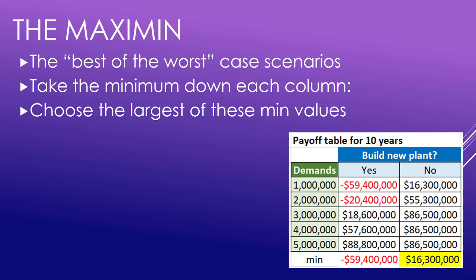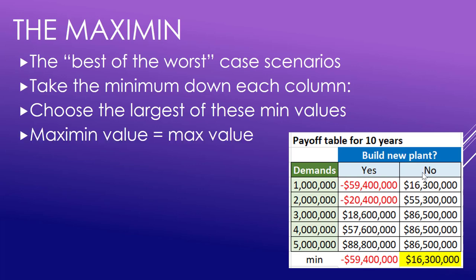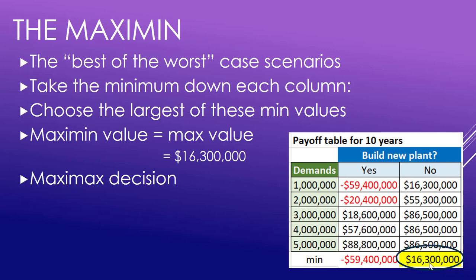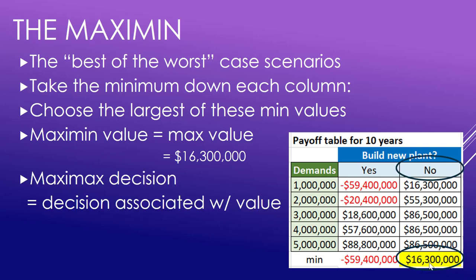Where does that 16 million come from? That's actually this value right here, which is your worst case scenario — what if your demand was only a million metric tons of pellets over the 10 years? If it were the very lowest demand, way lower than you thought or might hope for, then the best you can do is 16 million, and you can do that by not building a new plant. Maxi min value is 16 million; the decision associated with it is no, don't build the new plant.